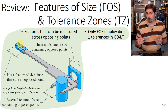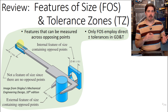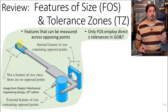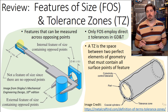An important point here is that only features of size employ the direct plus-minus tolerancing technique, or a unilateral tolerancing technique, as featured in regular coordinate tolerancing systems. With GD&T we only apply those plus-minus type tolerances to features of size and not to any other items on a drawing that have dimensions.